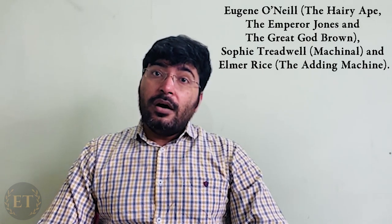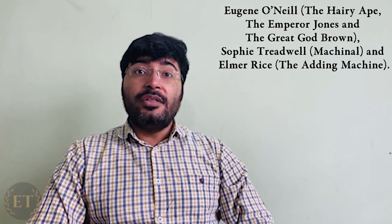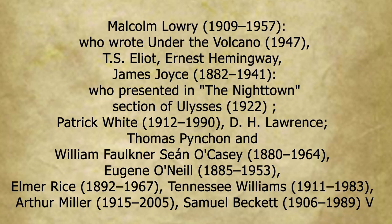Other writers include Sophie Treadwell and Elmer Rice (The Adding Machine), Malcolm Lowry (Under the Volcano, 1947), the poet T.S. Eliot (The Waste Land and Prufrock), and novelists Ernest Hemingway and James Joyce (Ulysses, 1922), D.H. Lawrence (Sons and Lovers), Patrick White (an Australian writer), Thomas Pynchon, William Golding, Cyrus Cassidy, Albert Camus, Tennessee Williams, Arthur Miller, and Samuel Beckett — all of whom used Expressionism in their writings.